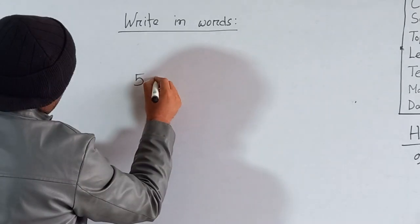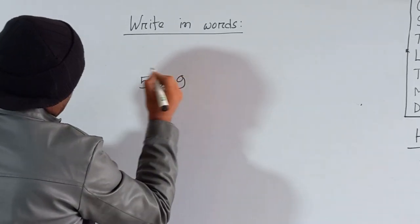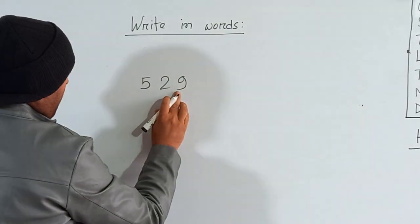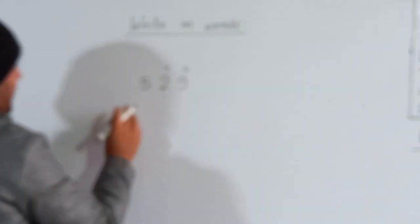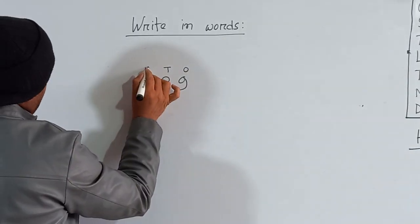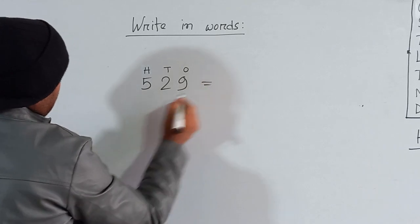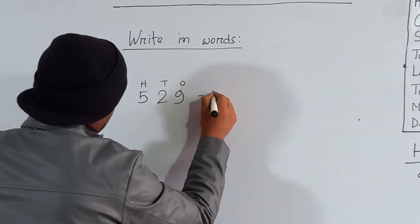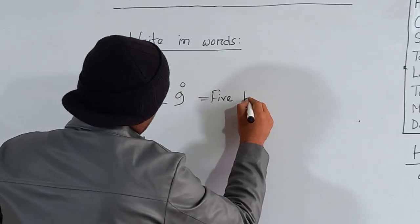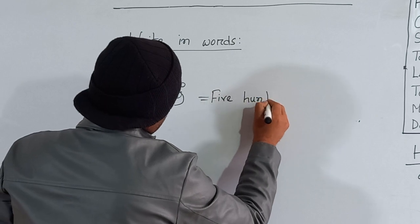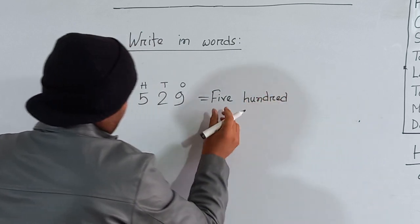Now look here. I have written 5-2-9. Here, 9 is in the ones place, 2 is in the tens place, and 5 is in the hundreds place. So how many hundreds are here? Five hundreds. So we can write here five hundred — F-I-V-E H-U-N-D-R-E-D — five hundred.